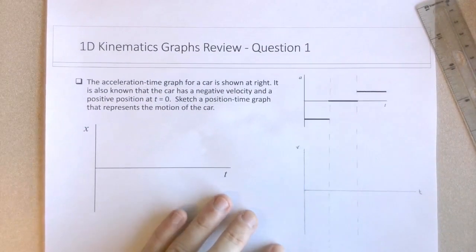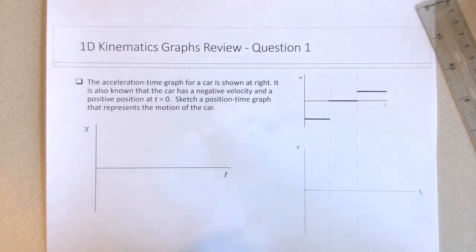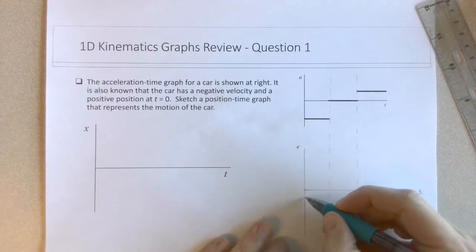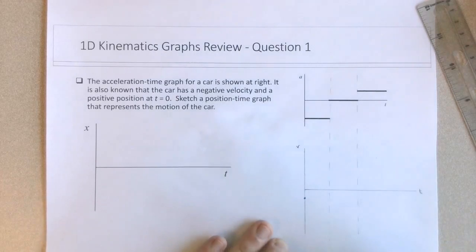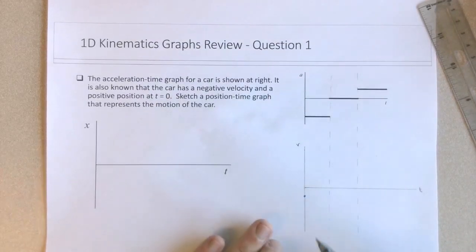So we're told that the object has initially a negative velocity. And so I'll start, it doesn't say how negative, but I'll just make it a small negative value here.